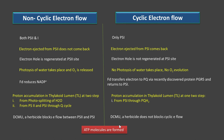ATP molecules are formed in both electron flow pathways. When non-cyclic electron traveling is studied in relation to ATP formation it is called non-cyclic photophosphorylation, and when cyclic electron traveling is studied in relation to ATP formation it is called cyclic photophosphorylation.